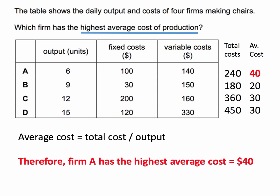Keep in mind that each firm is producing a different level of output. Firm A, for example, is producing six units whereas firm D is producing 15 units. We then divide the total cost by the level of output for each firm to get average cost. Firm B has the lowest average cost, partly because they've got the lowest fixed costs. Firm C and firm D both have an average cost of thirty dollars per chair, whereas firm A has the highest average cost of forty dollars per chair.